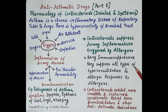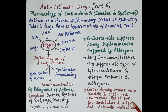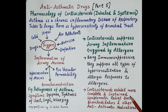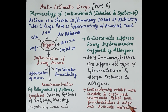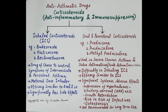Corticosteroids suppress inflammation triggered by allergens. They are immunosuppressive and suppress all types of hypersensitization and allergic responses to allergens. Since the root cause of asthma is inflammation, corticosteroids — being anti-inflammatory — provide more complete and sustained symptomatic relief in asthma than other bronchodilators or anti-asthmatic medications.